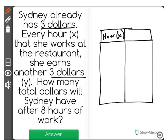So what do we know? Hours are X, dollars are Y. We know that she didn't work any hours and she already had $3 to start. And we also know that after every other hour she works, she gets another $3.